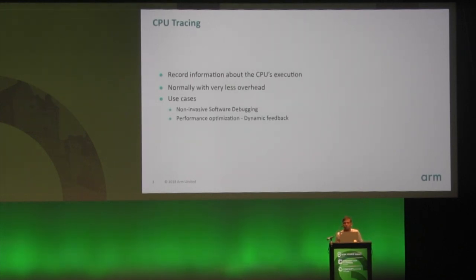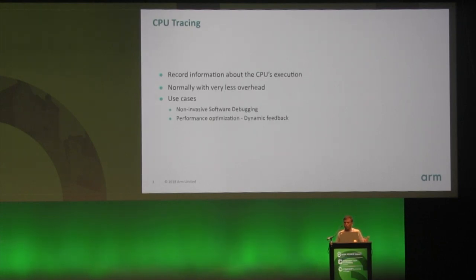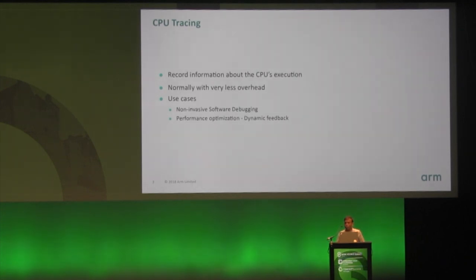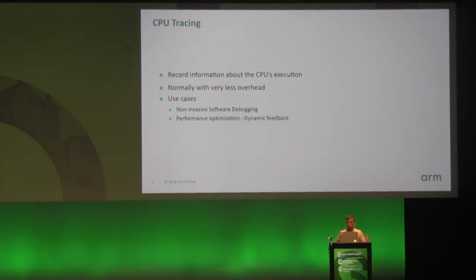What are the use cases of CPU tracing? Typically it has been debugging your software, where you can debug the software without having to intervene in the execution, collect the information back, and then analyze it later to figure out what the software was doing or not. Another interesting use case is performance analysis and optimization — you can have a dynamic view of the program's behavior, where it jumps, and that can be used to provide feedback into the compiler or other tools to optimize where you place the code and improve performance.